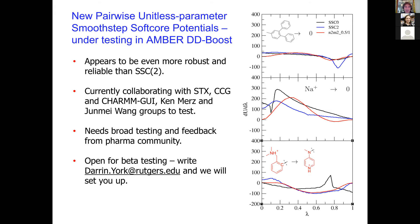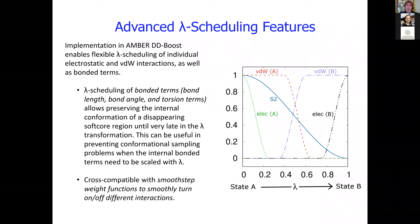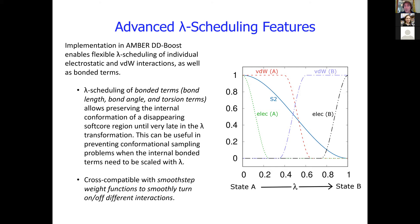Another feature in the Drug Discovery Boost package is the ability to do advanced lambda scheduling, allowing separate lambda schedules for different energy terms — including separate Van der Waals, electrostatic, and bonded term scaling for both the common core and soft core regions. This functionality, similar to features in other programs, is now available in AMBER with the Drug Discovery Boost package, and is fully cross-compatible with the smooth step soft core functions.